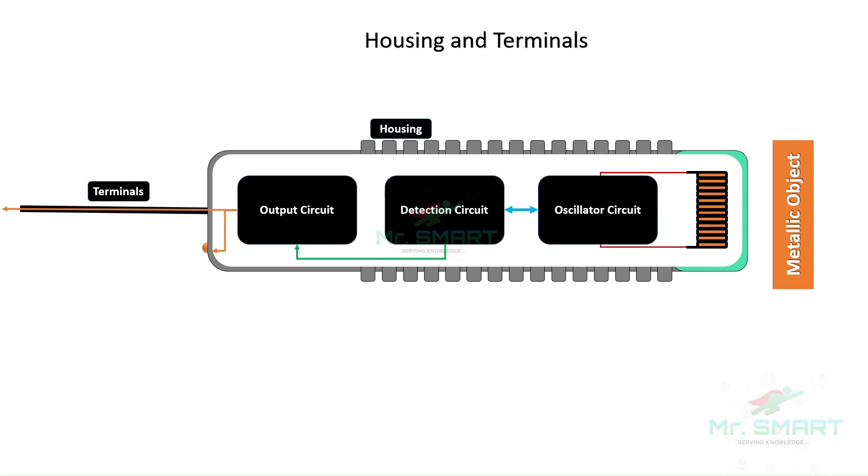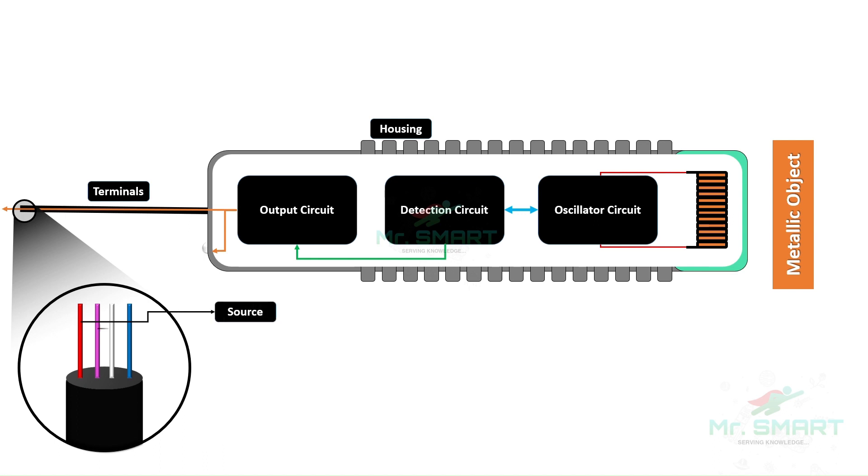Connector or terminal is the part through which the sensor transmits the signal to control systems such as PLCs or relays. Typically, the terminal or connector consists of four or three wires. In a four-wire connector, two provide signal and two provide power supply for working of internal components.